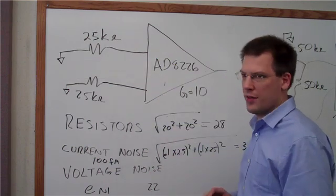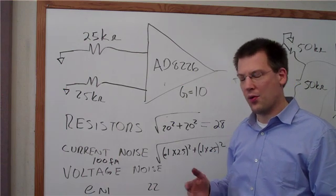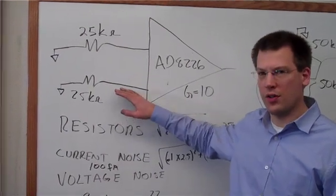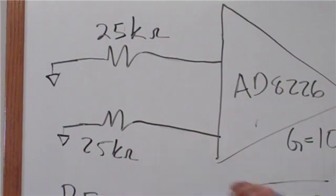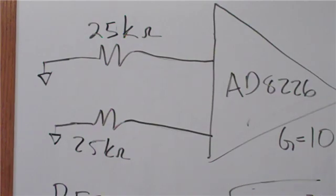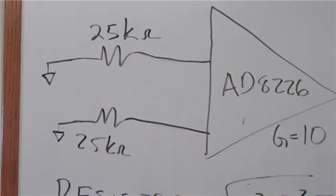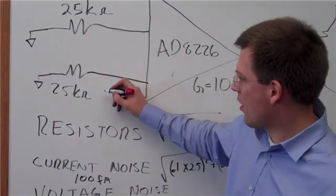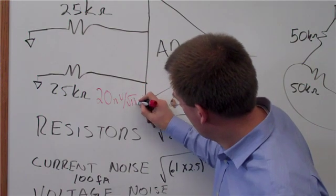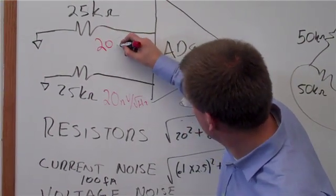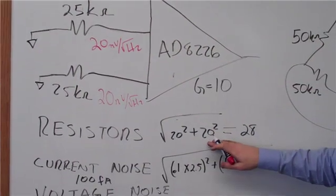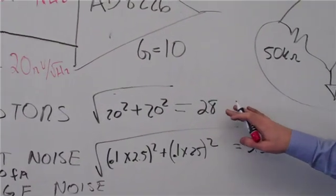First we're going to cover resistor noise. A 1 kilo ohm resistor has 4 nanovolts per root hertz of noise. We can use this to figure out what the noise of these resistors are. If a 1 kilo ohm resistor has 4 nanovolts, we can take the square root of 25 and get 5 and multiply that by 4 to figure out the noise. So the noise of these resistors is 20 nanovolts per root hertz. The total noise from our resistors is 28 nanovolts per root hertz.